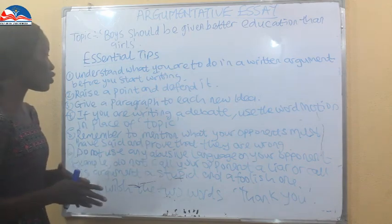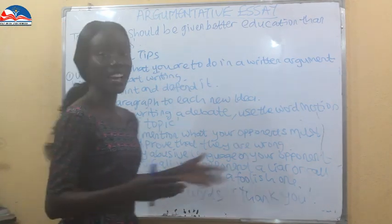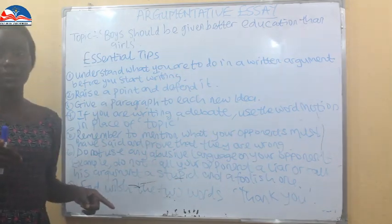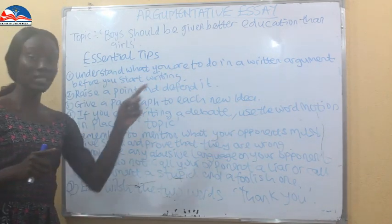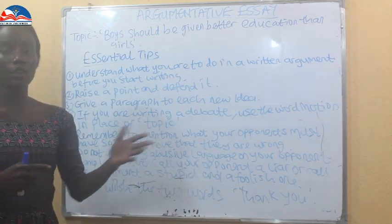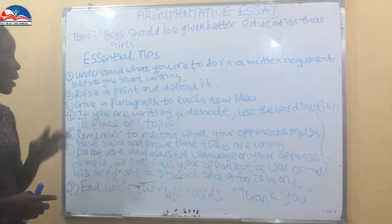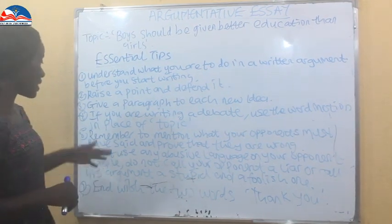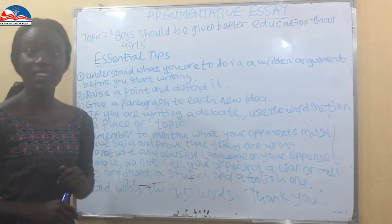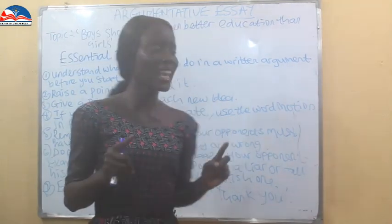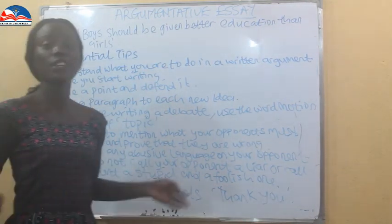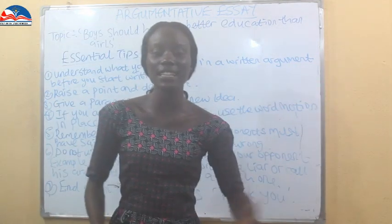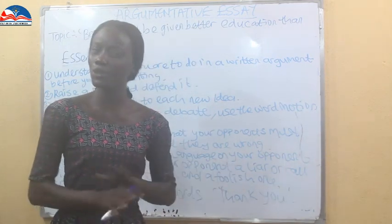The fifth tip: remember to mention what your opponent must have said and prove that they are wrong — you need to counter your opponent. However, do not use abusive words when countering. Do not call your opponent a liar, or call their argument stupid and foolish. Use respectful language when going against what your opponent has said.